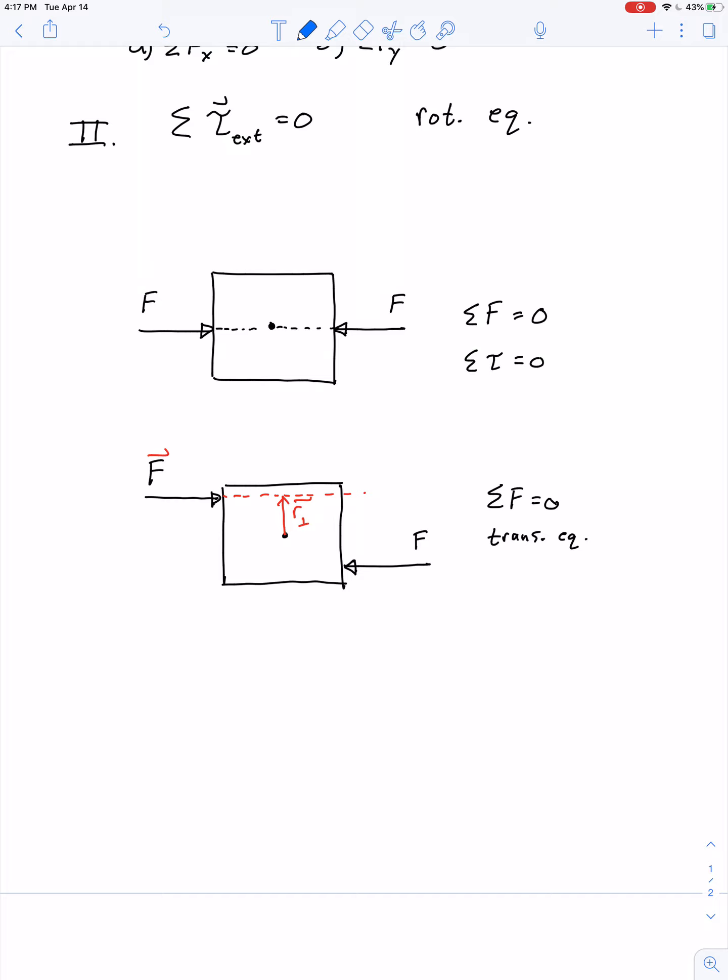other force has an associated torque. There's a lever arm perpendicular to the line of action of force. And so both torques would tend to rotate the block in a clockwise direction. And so there is a non-zero net amount of torque. So it is not in rotational equilibrium.